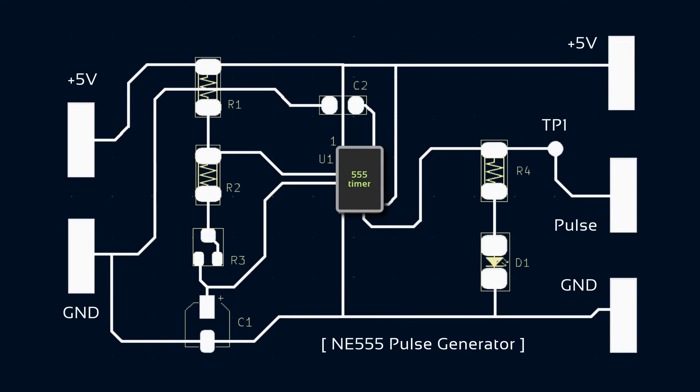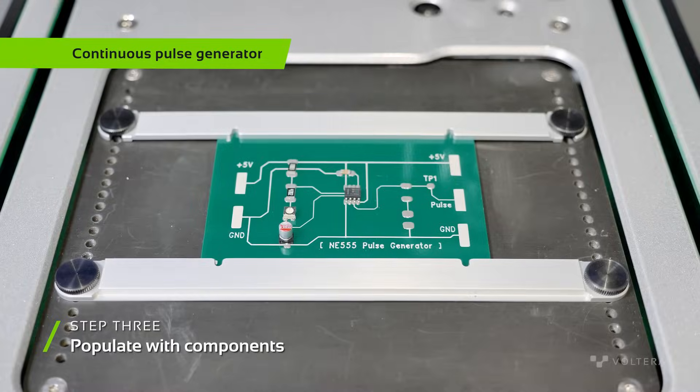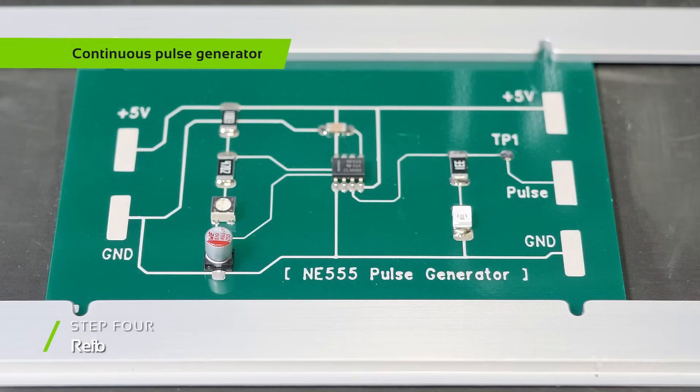This circuit works by utilizing a 555 timer in a stable or continuous mode, which allows us to set both the width and frequency of the pulse using resistors and a capacitor. Here we've used a potentiometer, a type of variable resistor, which will allow us to adjust the timing of the pulse by adjusting the resistance value of the potentiometer.